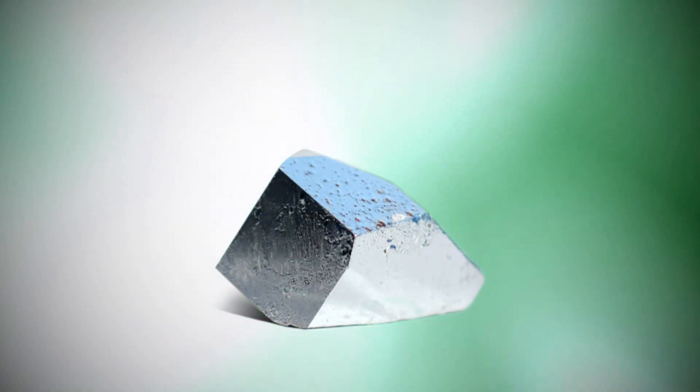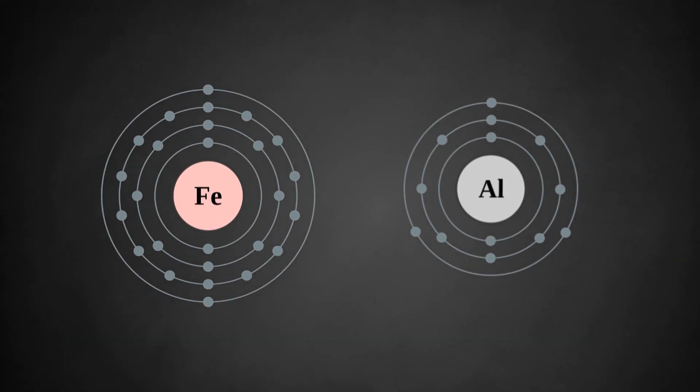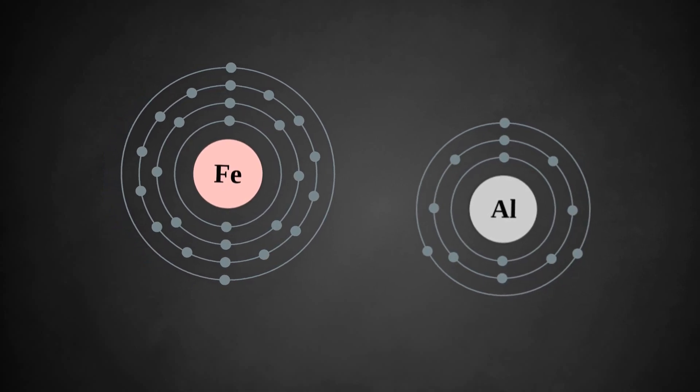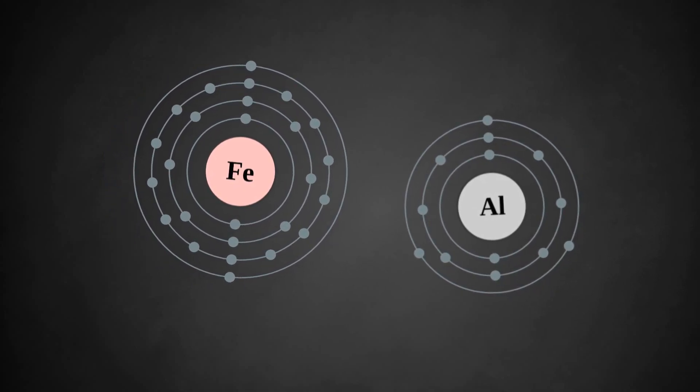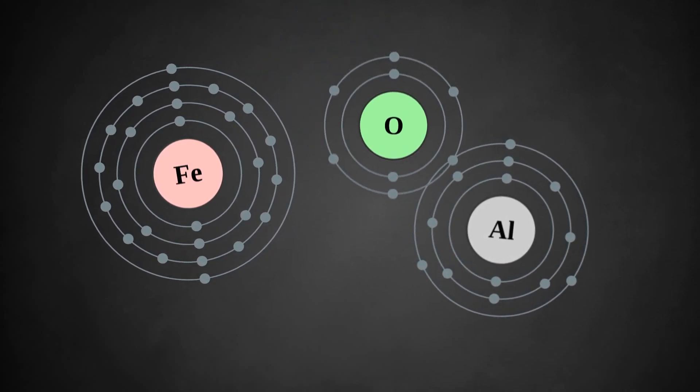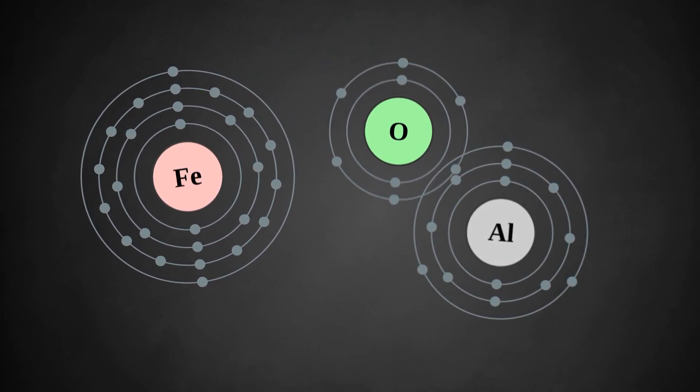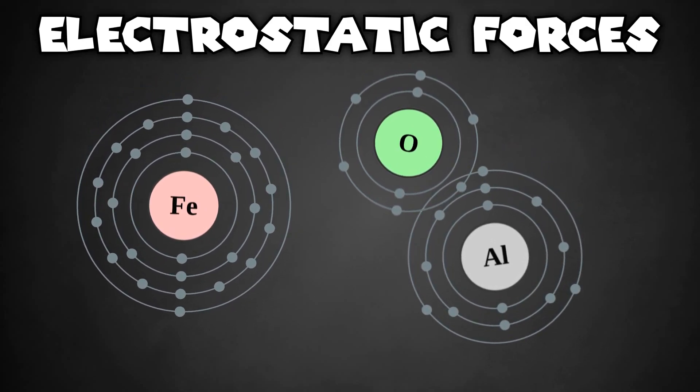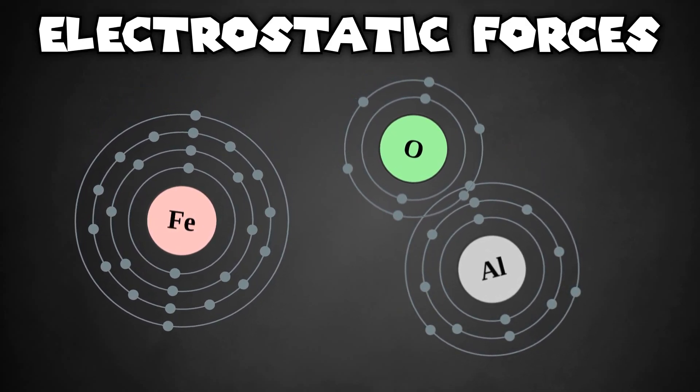But why is aluminum able to take the oxygen from the iron? Well, when we look at iron and aluminum on an atomic level, we see that the aluminum ions are significantly smaller than the iron atoms. The oxide ions are going to have an easier time getting close to the aluminum ions compared to the ferric iron. This results in forces called electrostatic forces that stabilize the aluminum oxide more effectively than the iron oxide.